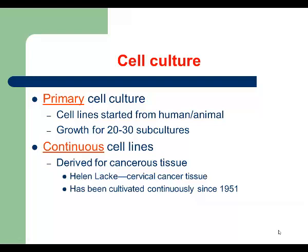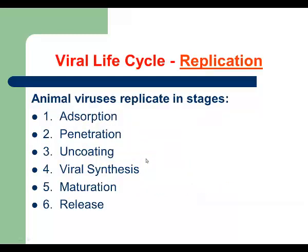So let's summarize how we can grow viruses in the lab: we can use embryonated chicken eggs, primary cell cultures, or continuous cell lines. Next, we're going to talk about the replication of animal viruses, because animal viruses are very similar to human viruses.